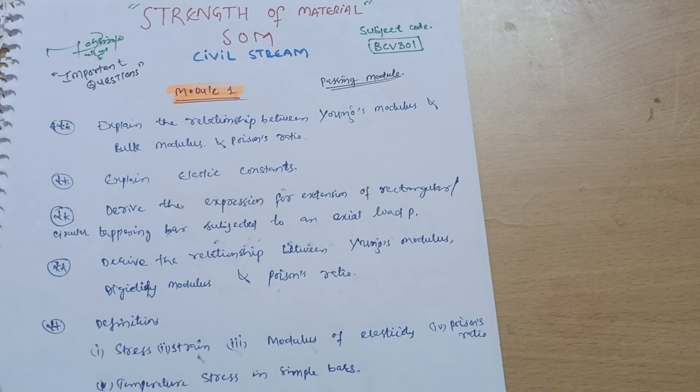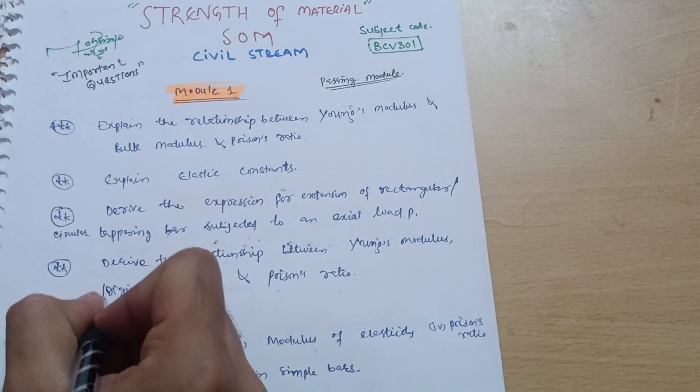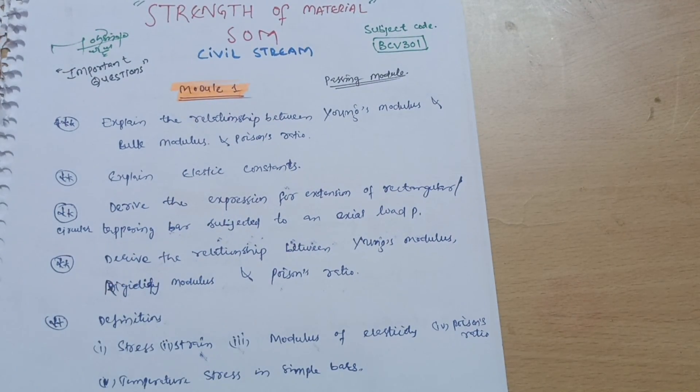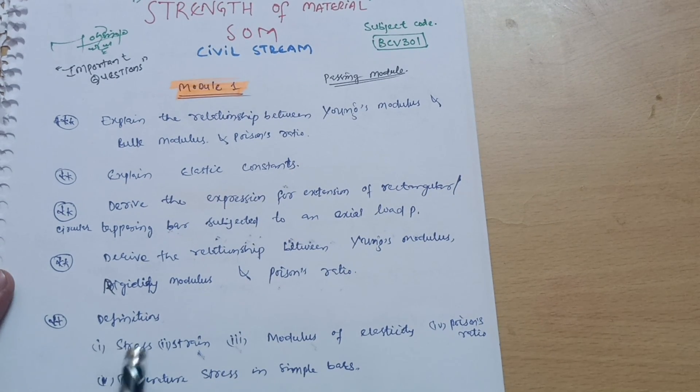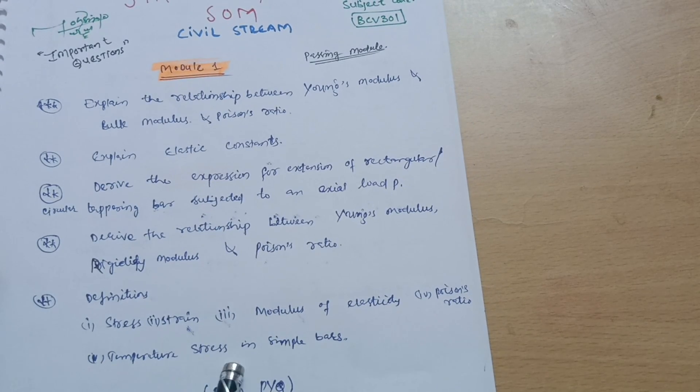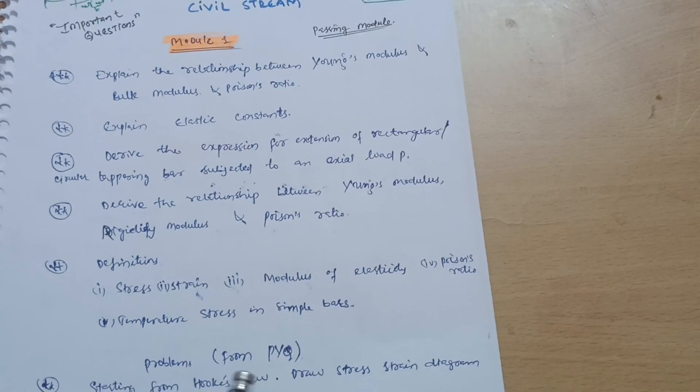Rigidity modulus. Next is some definitions they may ask, like stress, strain, modulus of elasticity, Poisson's ratio, or temperature stress in a simple bar. Starting from Hooke's law, draw stress-strain diagram and explain its salient points.